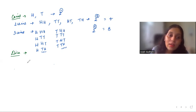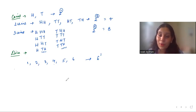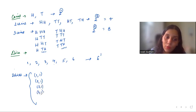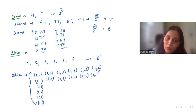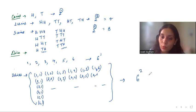Next is dice. When one die is rolled, we have six outcomes: 1, 2, 3, 4, 5, 6 — six outcomes, that is 6^1. When two dice are rolled, the sample space includes (1,1), (1,2), (1,3), (1,4), (1,5), (1,6), then (2,1), (2,2), (2,3), (2,4), (2,5), (2,6), and so on. Total outcomes = 6^2 = 36.